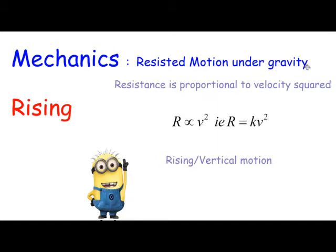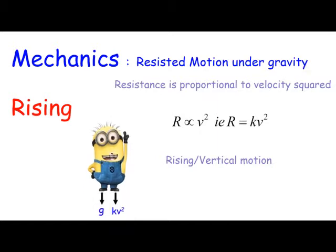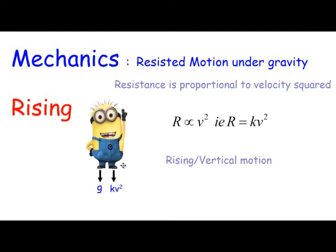The minion is still rising and you'll see here that the resistance is kv squared and g acting downwards. The gravity is acting in the opposite direction of the net force, which is in the positive direction, the upward direction. So let's set the equations up.